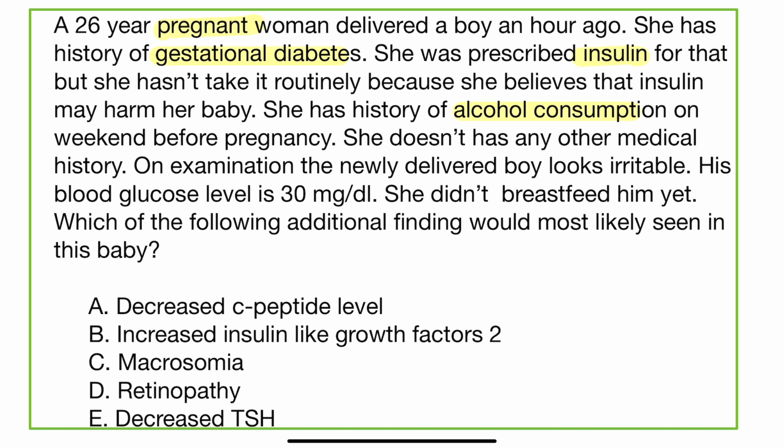She doesn't have any other medical history. On examination, the newly delivered boy looks irritable. His blood glucose level is 30 mg per deciliter. She didn't breastfeed him yet. Which of the following additional findings would most likely be seen in this baby?